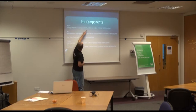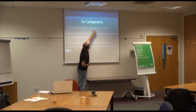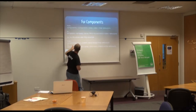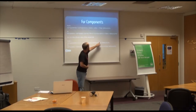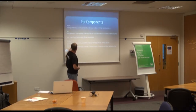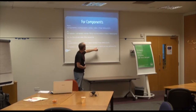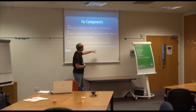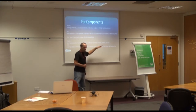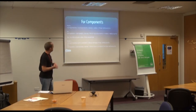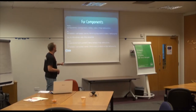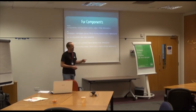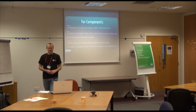So you can see here — for a component, this would be like com_content, views, article, tmpl, default.php. If you want to change the article, you put it in your template as: HTML, com_content, article. In your logical brain it would be HTML, com_content, views, article, template, default.php. But they cut the views and tmpl bits out, which is confusing. Why do they do that?